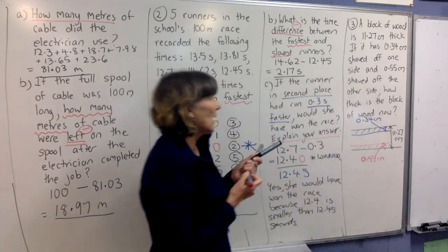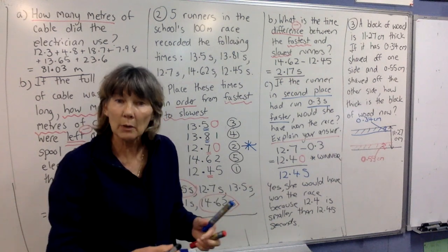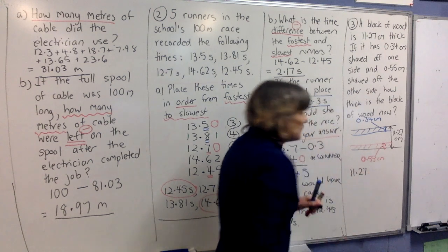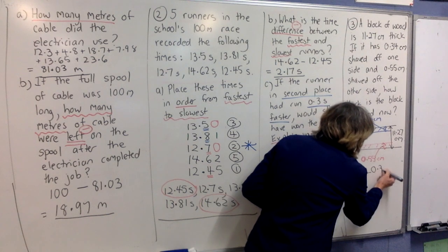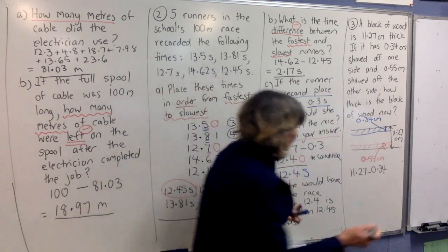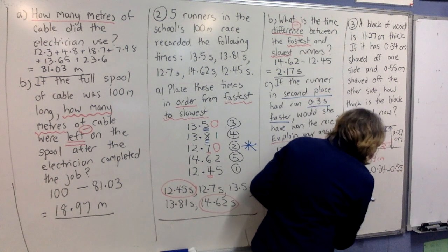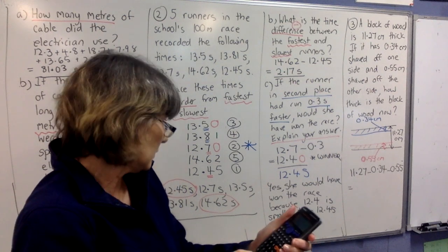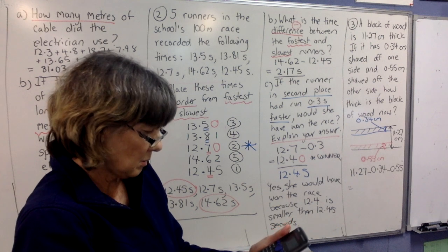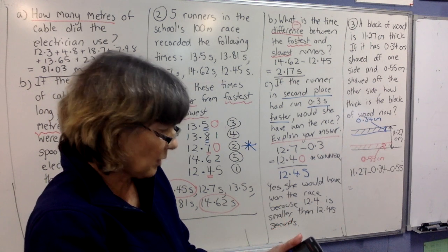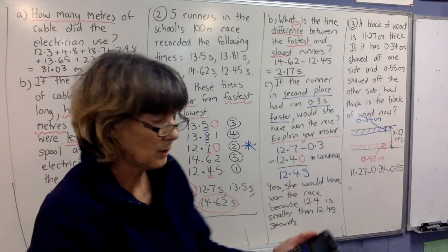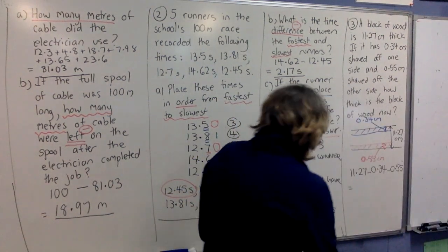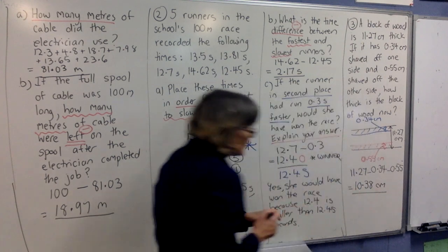So, now the question wants to know how thick is the block of wood now after you've shaved those things off? All right, so what's our working here? Our working is going to be to start with the thickness that it was, which was 11.27. Now, we're going to shave something off, so we're subtracting. We're going to subtract 0.34. And then we're going to shave another bit off, which is 0.55. So, we're going to subtract that. And now I'm going to go to my calculator. So, we're going to go to the calculator, type in exactly what I've done there. 11.27 minus 0.34. Oops, start that again. Minus 0.34 minus 0.55. Right. Now, I press equals. 10.38 is my answer. Right down. Now, right centimetres on the end because they're the units. Now, that's the answer to the question.